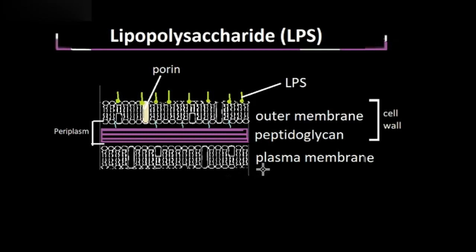At the base here we have the plasma membrane, which is composed of phospholipids and has proteins embedded within it. The plasma membrane regulates what can enter and exit the cell. Surrounding the plasma membrane is the cell wall, and the cell wall of gram-negative bacteria is composed of a thin layer of peptidoglycan and an outer membrane.